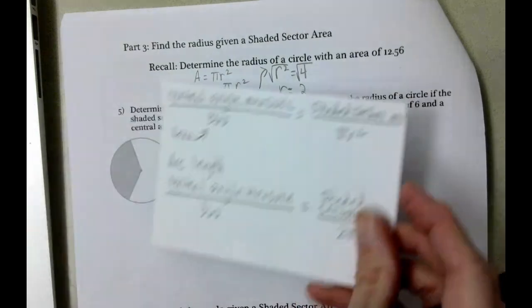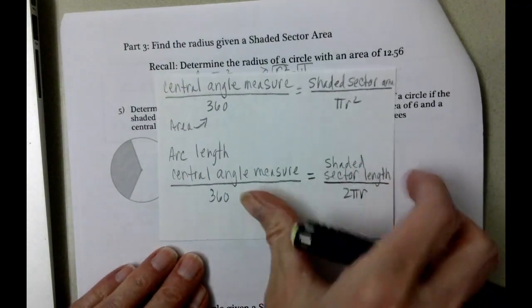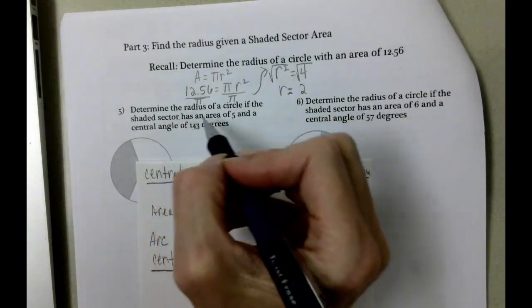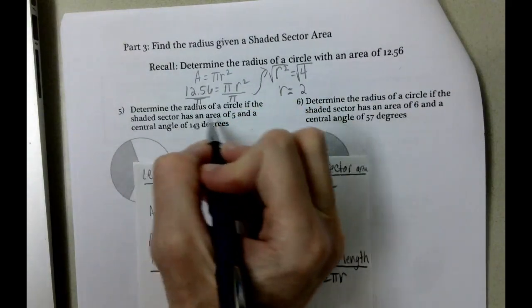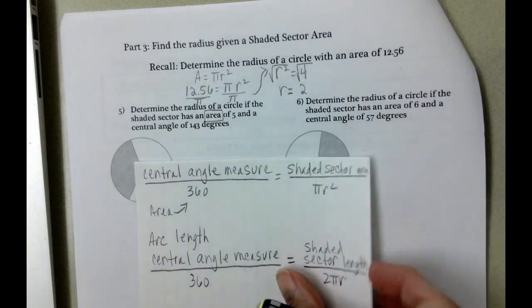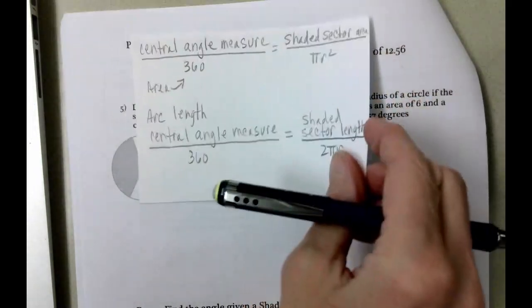What you might want to do is something that I did - I made a note card. It says determine the radius of the circle if the shaded sector has an area. Again, we have to look for what we're given. Are we given area? Are we given length? We're given area.